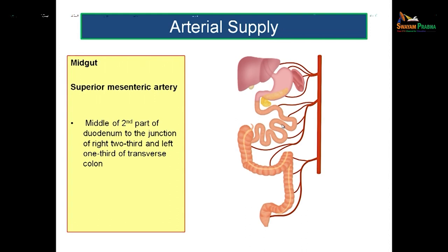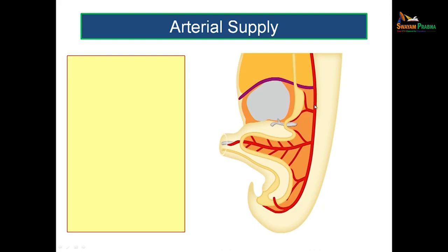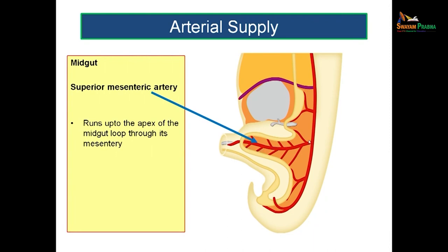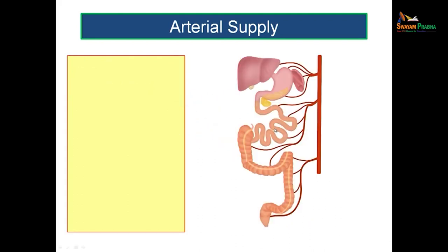The regions supplied by the superior mesenteric artery correspond to the midgut derivatives: from the middle of the second part of the duodenum to the junction of the right two-thirds and left one-third of the transverse colon. That is the region supplied by the superior mesenteric artery. The superior mesenteric artery runs towards the apex of the loop of the midgut through the mesentery from the posterior aspect, dividing the midgut loop into a proximal segment and a distal segment.